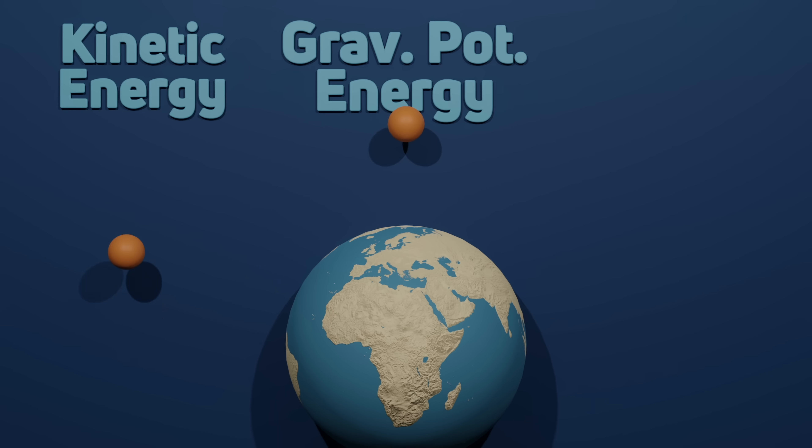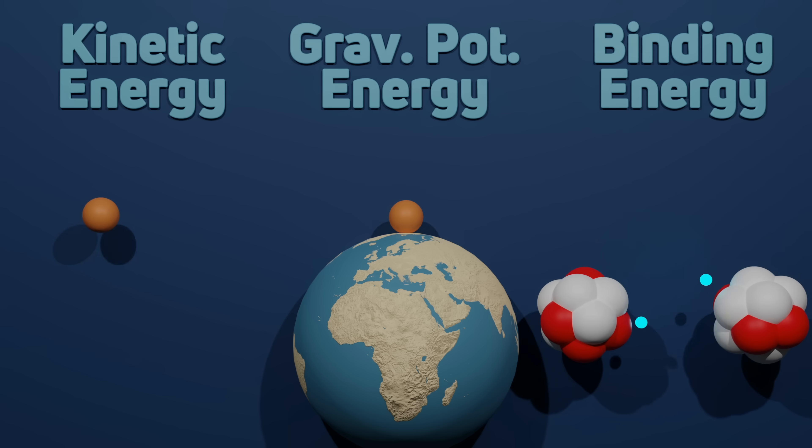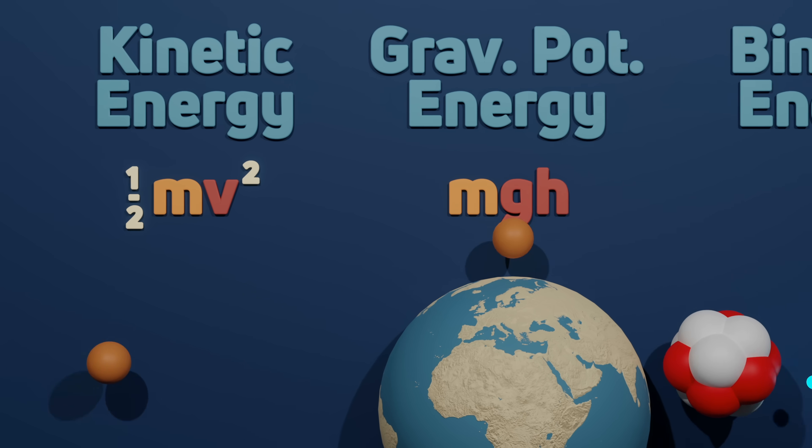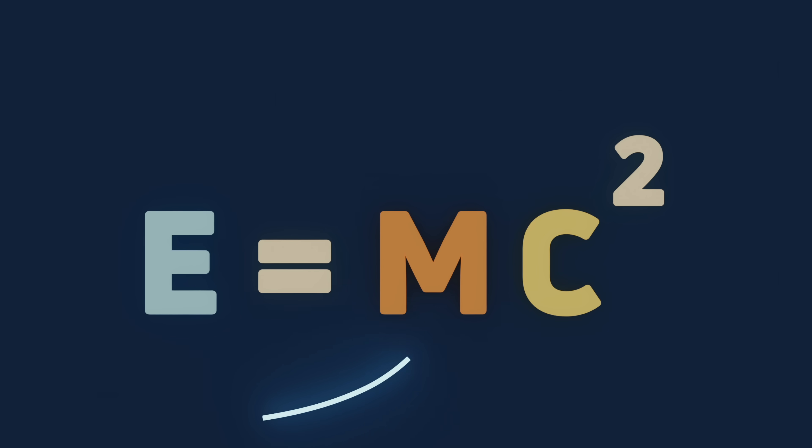This could be kinetic energy, gravitational potential energy, binding energy, all kinds of energy. But I want to simplify things since kinetic energy and gravitational energy are also mass-dependent. Instead, let's say we want to convert all of this M into a massless entity.